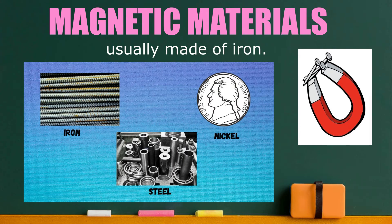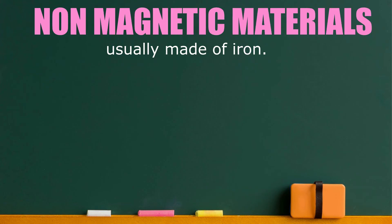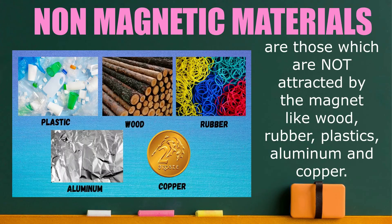Examples of magnetic materials: iron, steel, and nickel. Non-magnetic materials are those which are not attracted by the magnet, like wood, rubber, plastics, aluminum, and copper.